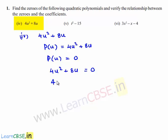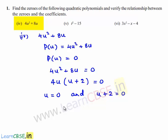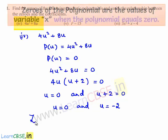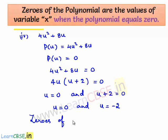We can take 4u as a common factor: 4u times of u plus 2 is equal to 0. From this, we can say that u is equal to 0 and u plus 2 is equal to 0. So u is 0 and u is equal to minus 2. Therefore, the zeros of the given polynomial are 0 and minus 2.